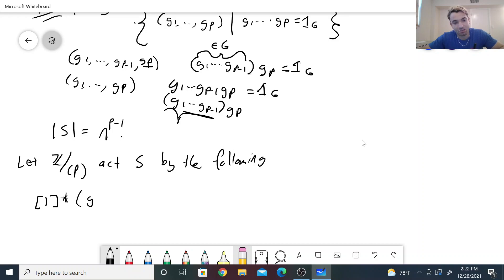So 1 acts on an element in S, (g_1, ..., g_p), by permuting this around in a cyclic manner, namely shifting g_p to the front. The last one comes up and everything moves over 1, so it looks like (g_p, g_1, ..., g_(p-1)). And one can check that this is indeed a group action.